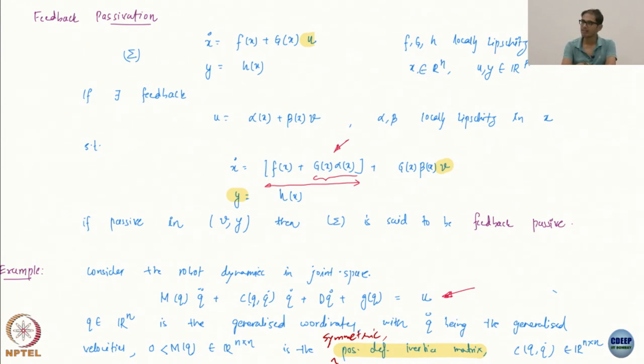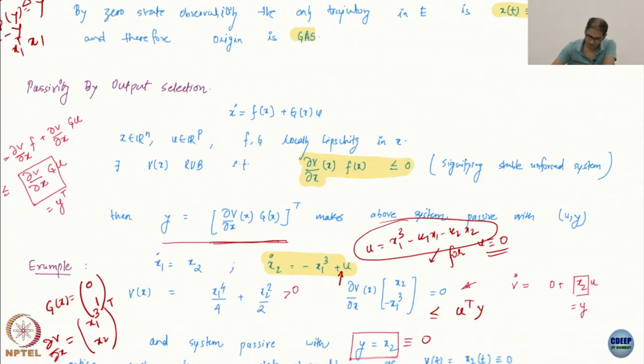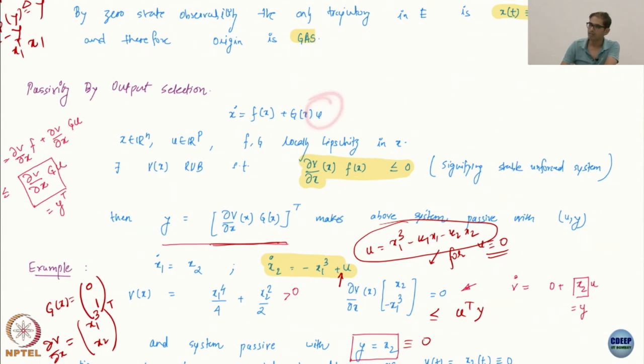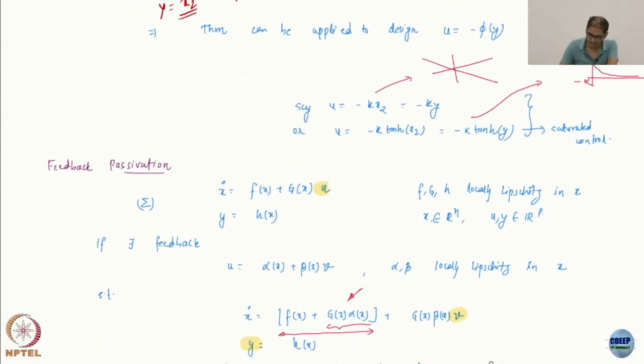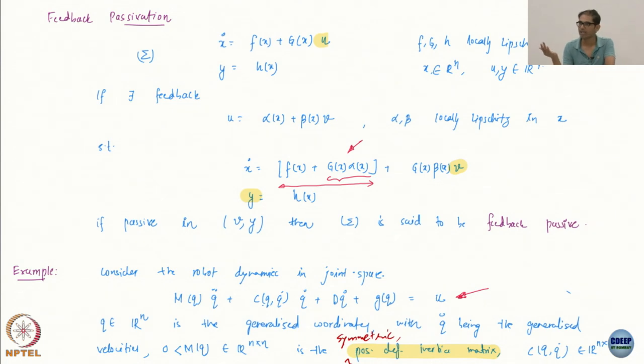If you substitute this control back here, you are going to get this sort of an expression. Now, if it so happens that this system is passive in V,y, then the system is said to be feedback passive. But again, looks very general and looks like it is not going to help us at all. But it is, because we are just trying to generalize this situation. We are going to use this control somehow to sort of give a feedback term.